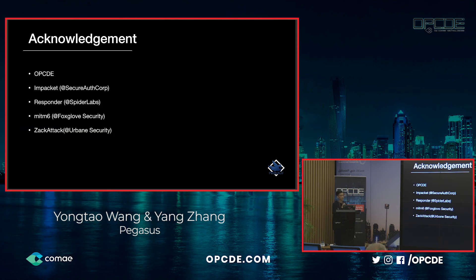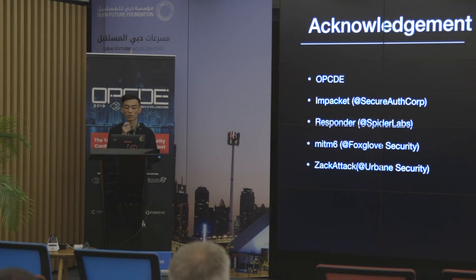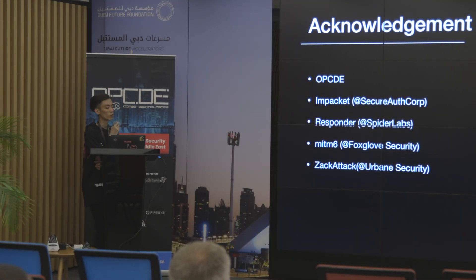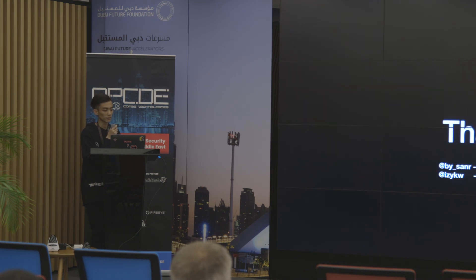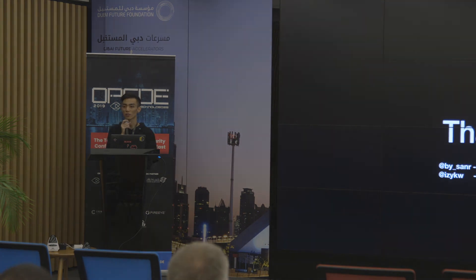In summary, performing an NTLM relay attack requires an HTTP request sent to us. We have many ways to trigger that: SSRF, XSS, sandbox escapes, cloud servers — anything that sends an HTTP request is effective. The attacker can then relay to HTTP, SMB, LDAP, and not just SMB. This will lead to remote command execution. We believe this is a new method for NTLM relay attacks, and combined with the high-risk vulnerabilities we found, it's easy to gain RCE. We'd like to thank OPCDE for the opportunity, and thanks to SecureWorks, Spider Labs, Fox-IT, and Dark Attack for their useful tools.